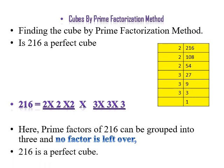This means 216 is a perfect cube, as no prime factor is left over. When no factor is left over, the given number is known as a perfect cube.